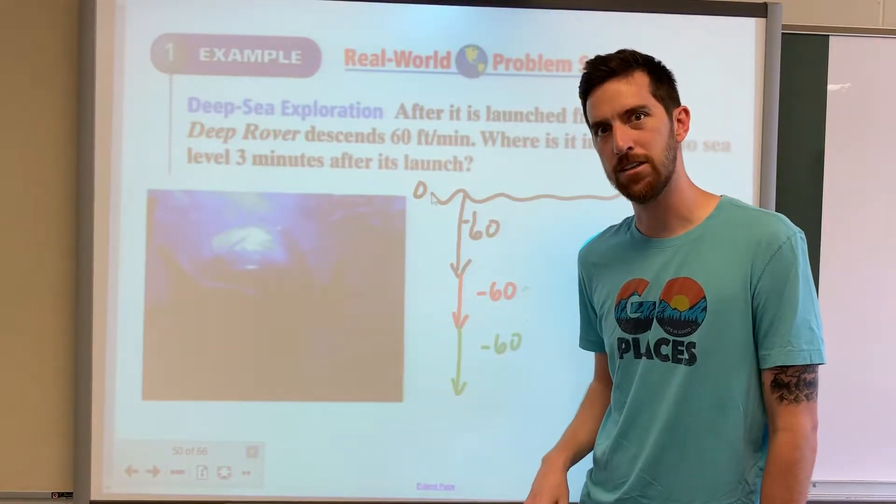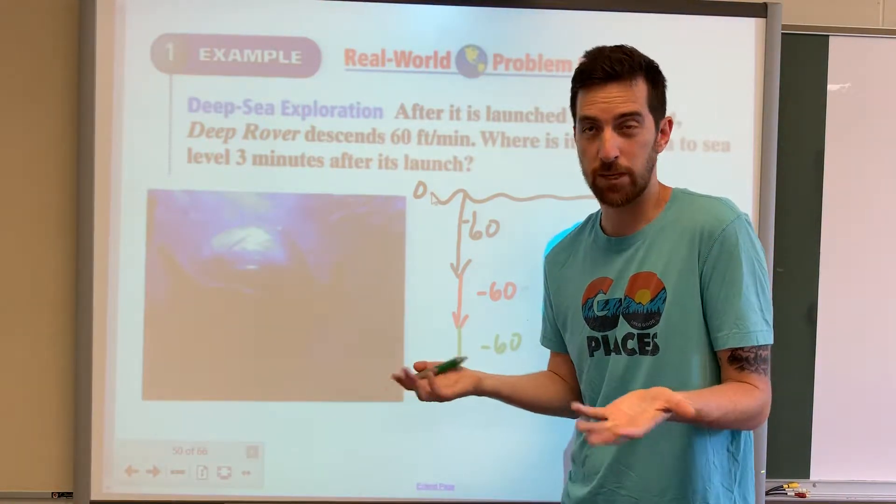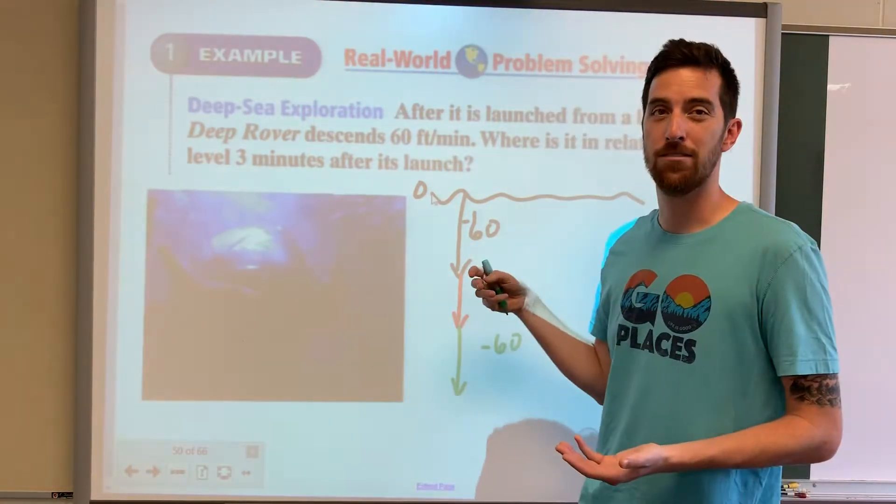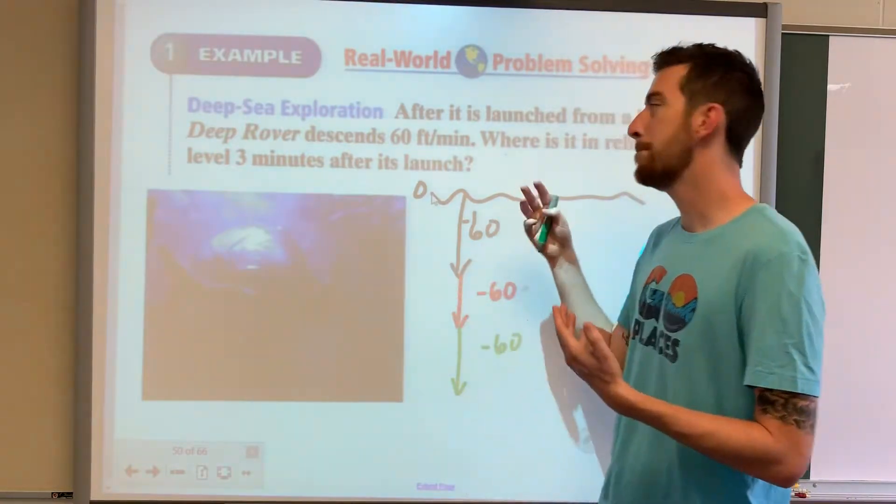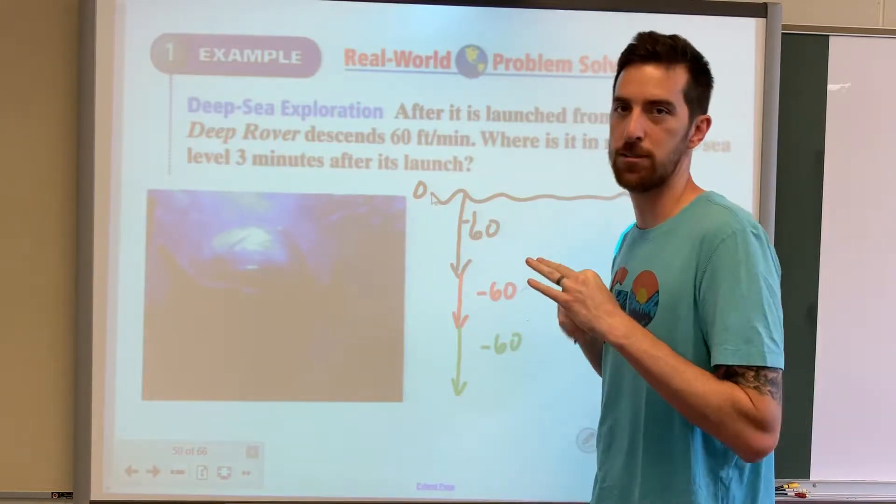You can do this with repeated addition if you'd like, or you can multiply. It's going down 60 feet every minute and it goes for three minutes, so instead of doing negative 60 plus negative 60 plus negative 60, you could just do negative 60 times three.